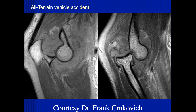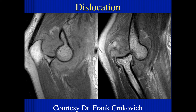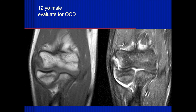This is an elbow dislocation scanned in the scanner — the radius is not articulating with the capitellum anymore, so it's dislocated. A 12-year-old male: there's an avulsion fracture of the lateral epicondyle at the attachment of the common extensor tendon and a joint effusion. This is actually a bony avulsion, getting posteriorly toward the lateral ulnar collateral ligament — a bony avulsion of the lateral ulnar collateral ligament.